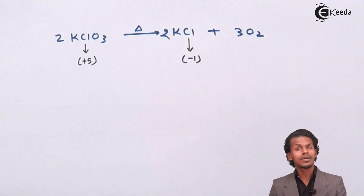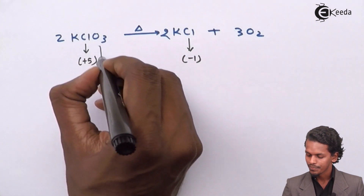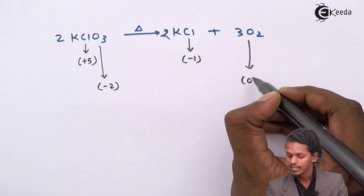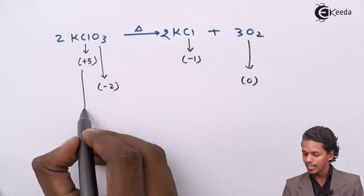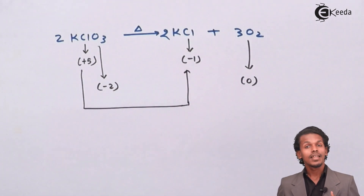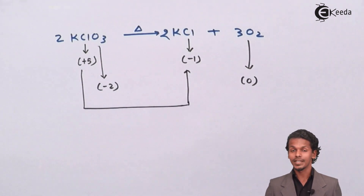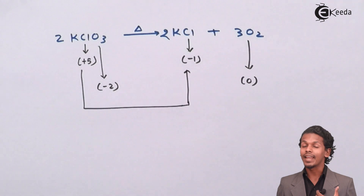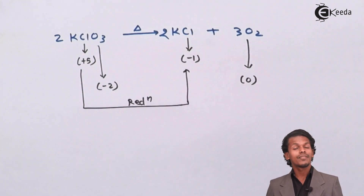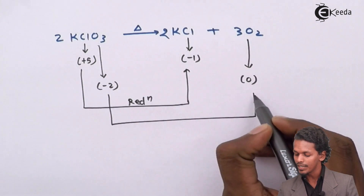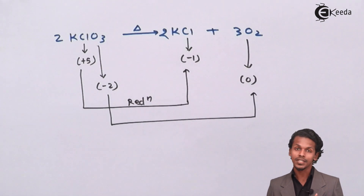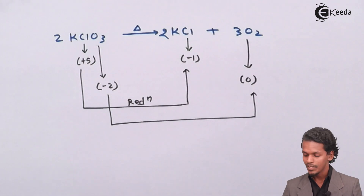When I consider the oxygen atom, it has an oxidation number of −2 in the reactant and has now been converted to an oxidation number of 0 in the product O₂. So +5 for chlorine is converted to −1: since chlorine accepts electrons, this process is reduction. For oxygen, the oxidation number increases from −2 to 0, meaning electrons have been lost — so this is oxidation.